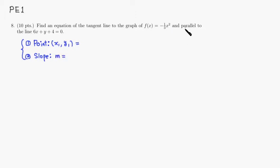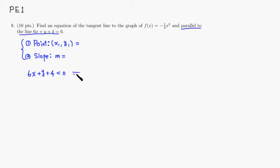Since it is parallel to the given line 6x + y + 4 = 0, it has to have the same slope as that line. So let's find that slope. We isolate y to rewrite it in slope-intercept form: subtract 6x and subtract 4 from both sides to get y = −6x − 4. The slope is −6.